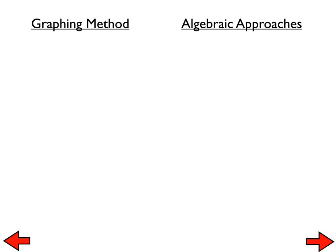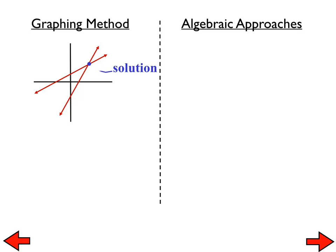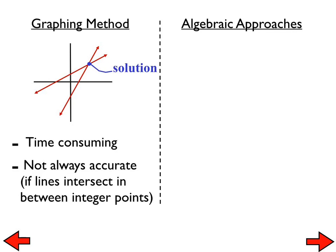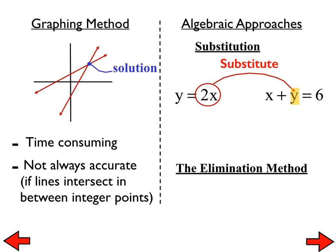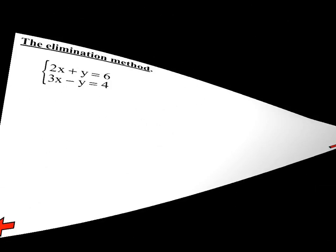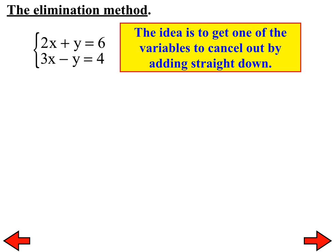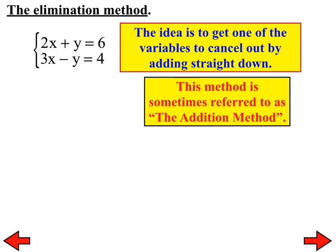The graphing method has us figure out where two lines intersect each other, and that ends up being the solution. It works okay, but it's a little time-consuming, and if the lines intersect at non-integer points we can't tell exactly where they're crossing. The substitution method works well but can get tedious depending on how difficult both equations look. Today: the elimination method — also referred to as the addition method — because we eliminate a variable by adding straight down.